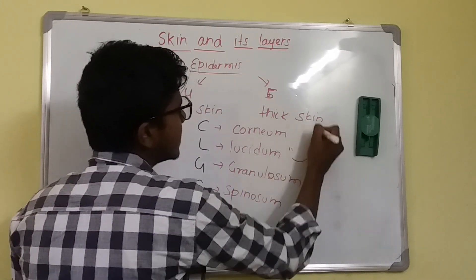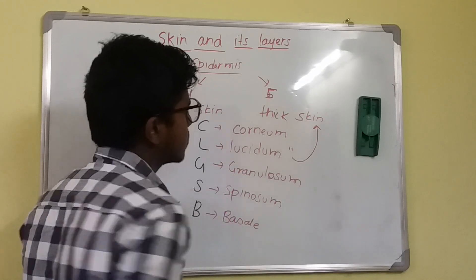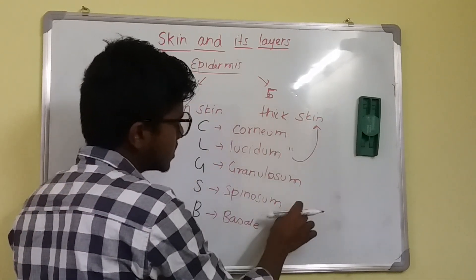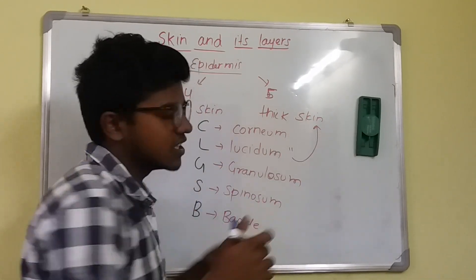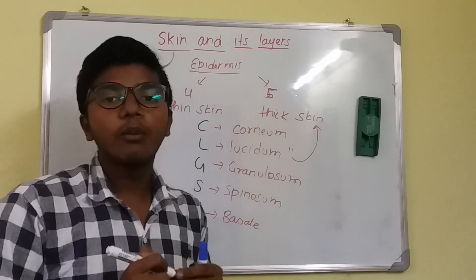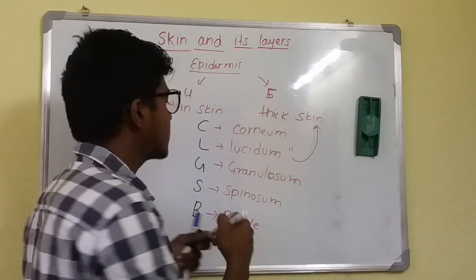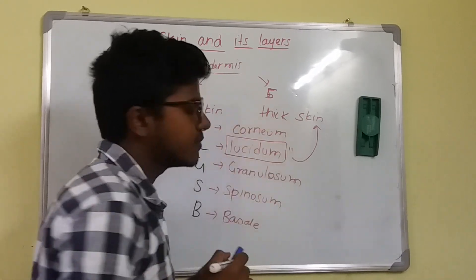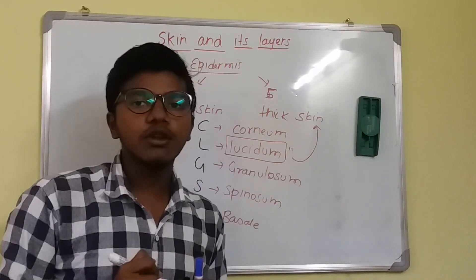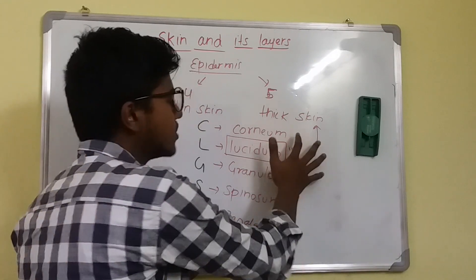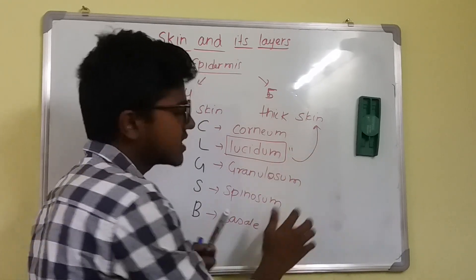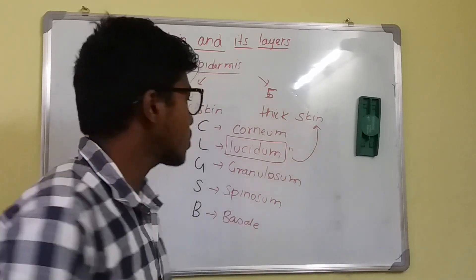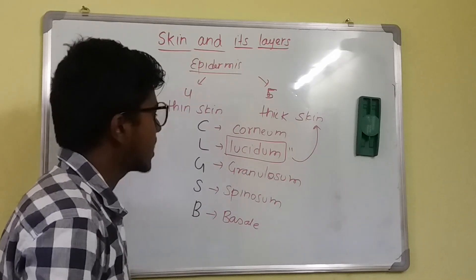The Lucidum layer is added only in thick skin. Normally, only four layers are present: Corneum, Granulosum, Spinosum, and Basale. The mnemonic is: Country looks green since Bisac (or Bhadra), and we can memorize accordingly.